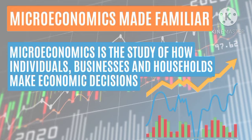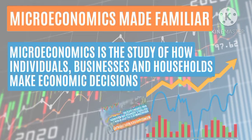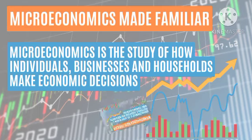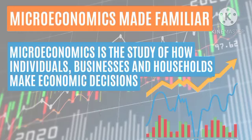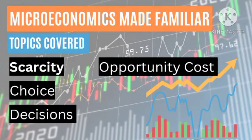Another thing that we'll cover in microeconomics is opportunity costs. Let's say you have money and you have to choose between spending it on food or spending it on rent. If you spent it on food, you are forgoing your rent — so that's an opportunity cost. Basically, an opportunity cost is the cost of making one decision. If I decide to spend my time relaxing instead of studying or learning something new, then by choosing to relax, I am forgoing an opportunity to learn something new.